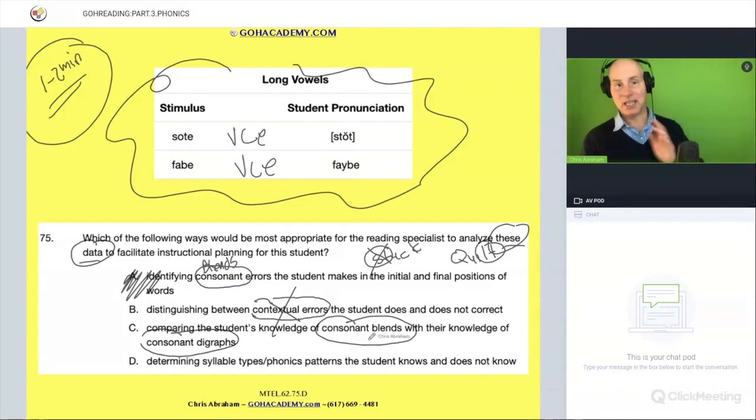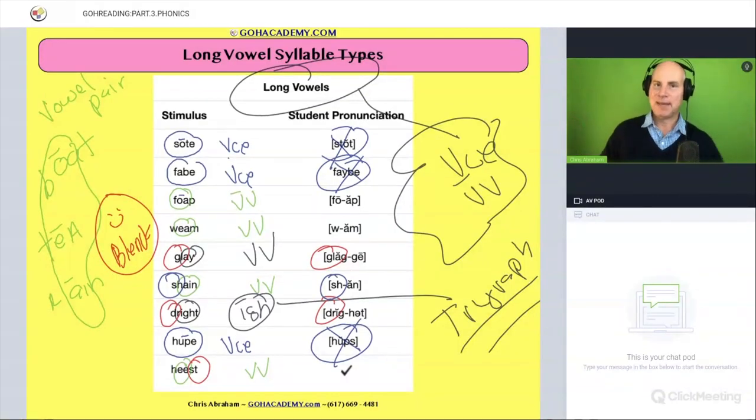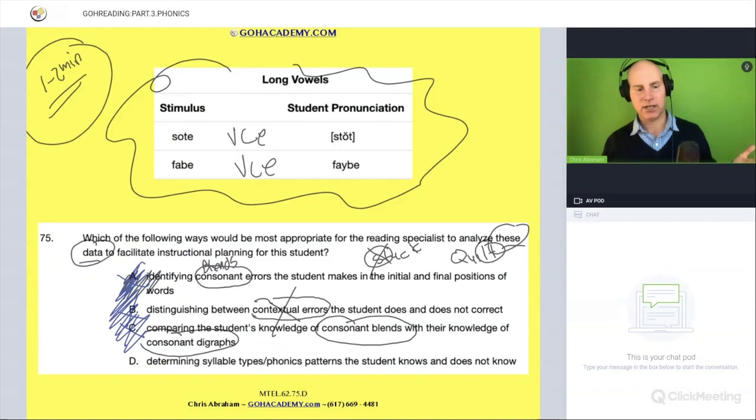So to be honest with you, I love that until 62 test, they used consonant blends, consonant digraphs here. Good vocabulary. Nice review. I really like it. But team, that's not the issue. That's not. Okay. How about this one right here? In doing an assessment like this, does it make sense that you look for patterns in strengths and weaknesses? Right? So let's go back to the question now. It says here, determine syllable type phonics patterns, syllable type phonics patterns. So we could have said determine phonics patterns the student knows and does not know. Or we could have said determine syllable types the student knows and does not know. Or we could have said determine phonics syllable types the student knows and does not know.